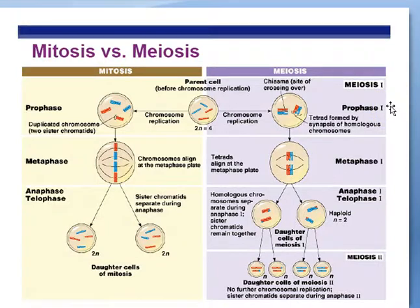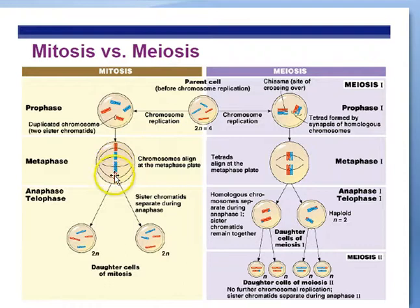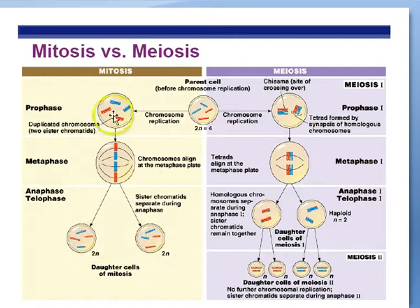Here we have a comparison of mitosis and meiosis — a good review diagram. In mitosis, we have four chromosomes, two of each type. 2N equals 4, meaning two sets of chromosomes equals 4 chromosomes total. During PMAT, the chromosomes line up in a single line, separating out the sister chromatids, giving you two cells genetically identical to the starting cell. This is how all your body cells — somatic cells — are made.